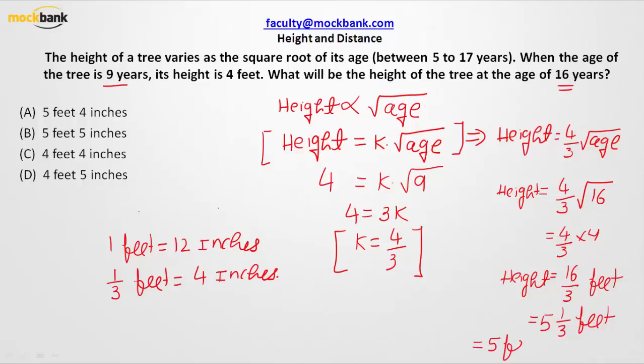That is how we are getting this answer to be 5 feet and 4 inches, which is our option C. So what did I do in this video? I knew that there is a relationship between height and age of the tree. It says that height of the tree is in direct proportion to square root of the age. Then I brought a proportionality constant, that is k.